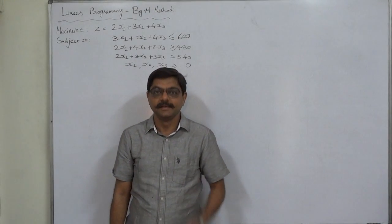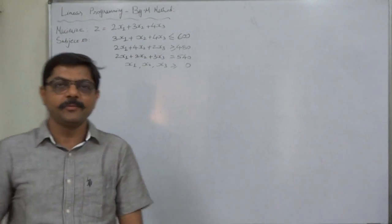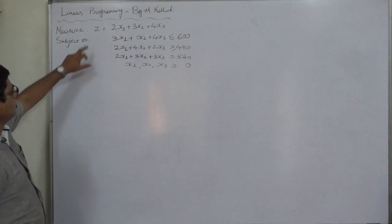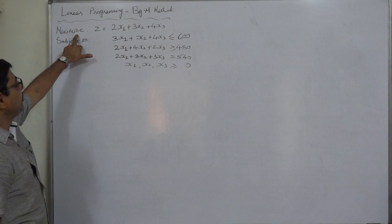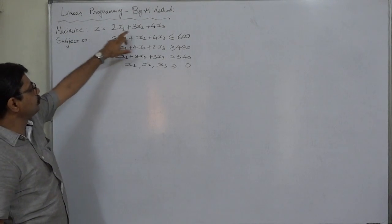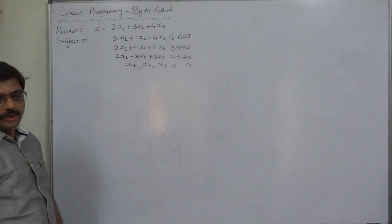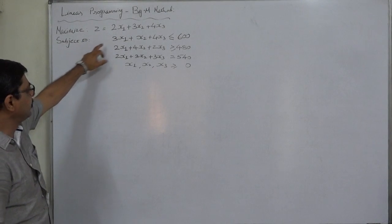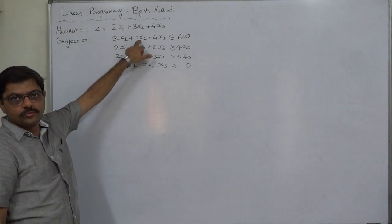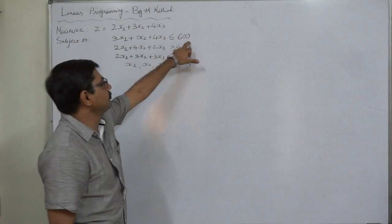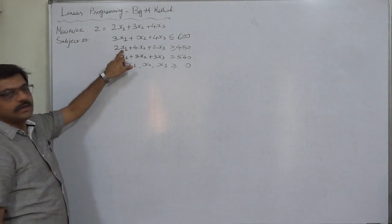Hello and welcome. Let us take a new case of linear programming. Maximize z equals 2x1 plus 3x2 plus 4x3 subject to the constraint 3x1 plus x2 plus 4x3 less than or equal to 600, 2x1 plus 4x2 plus 2x3 greater than or equal to 480.